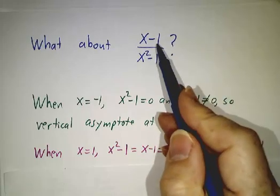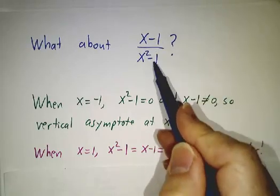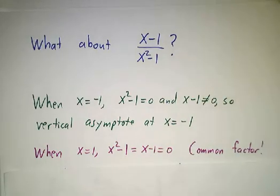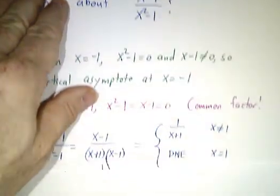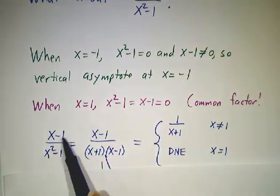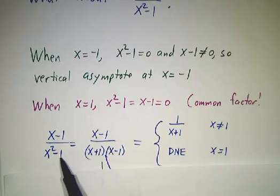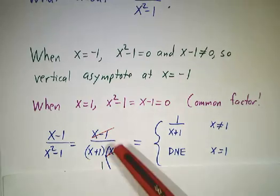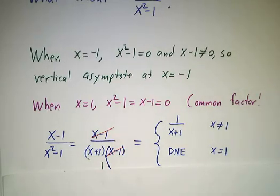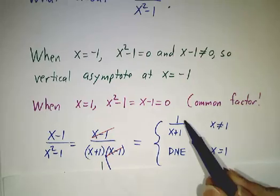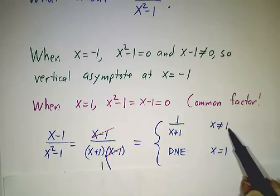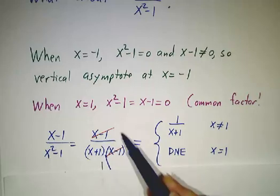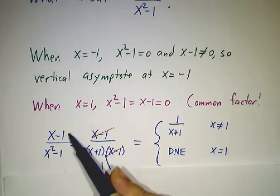But when x equals one, both the numerator and the denominator are zero. And how do you deal with zero over zero? Well, you cancel the common factor. If you look at (x - 1) over (x² - 1), that's (x - 1) over (x + 1)(x - 1). And you just cancel the factors of x - 1. That makes sense everywhere except where x equals one. So you get the function 1 over (x + 1) everywhere except where x equals one. And this whole thing doesn't make sense at x equals one because it's zero over zero.